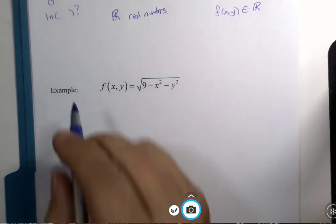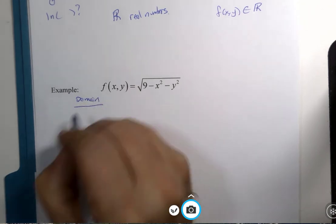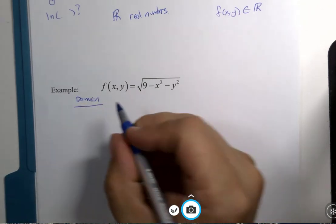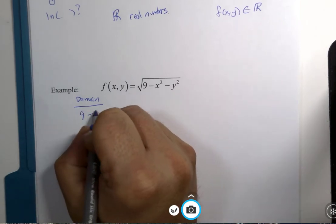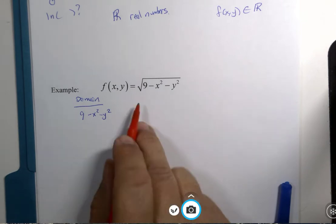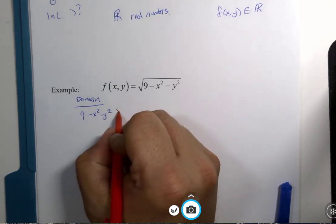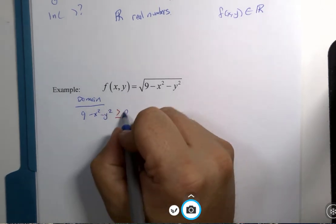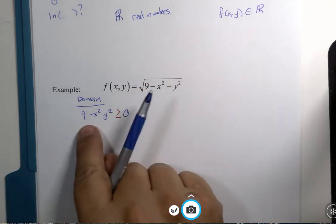When I talk about the domain, I know that in this domain that the 9 minus the x squared minus the y squared has to be something that is not negative. Greater than or equal to 0, and then I can calculate the root.